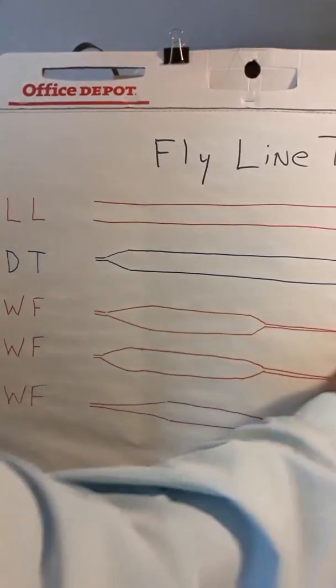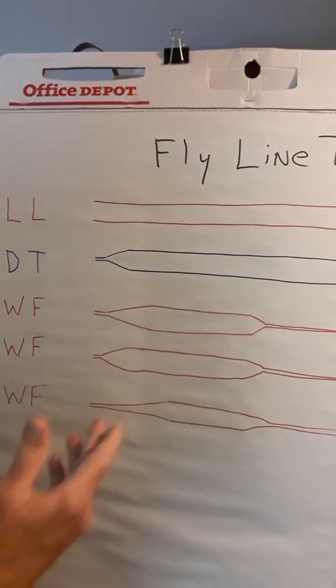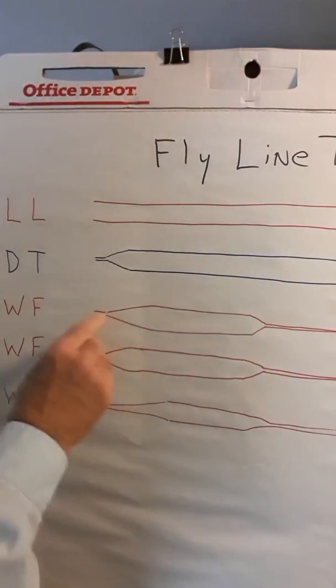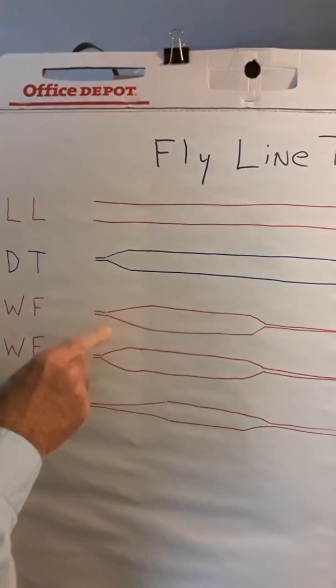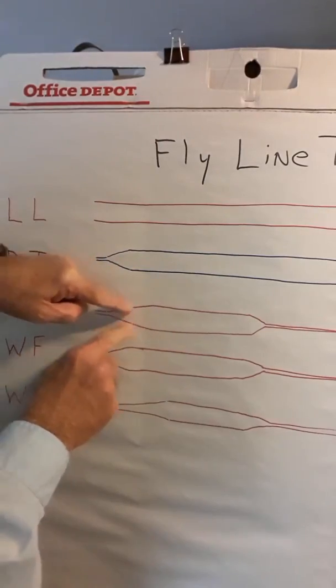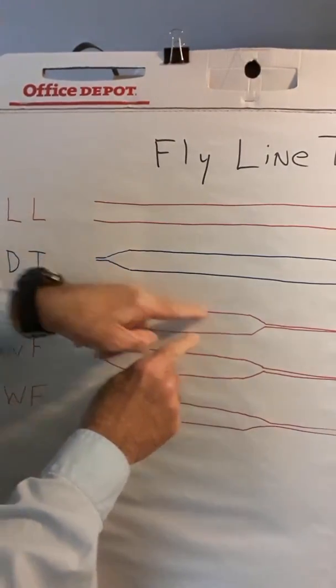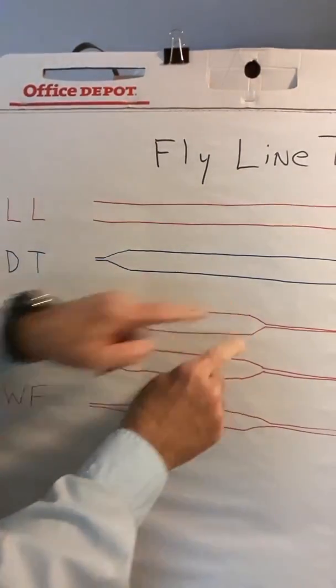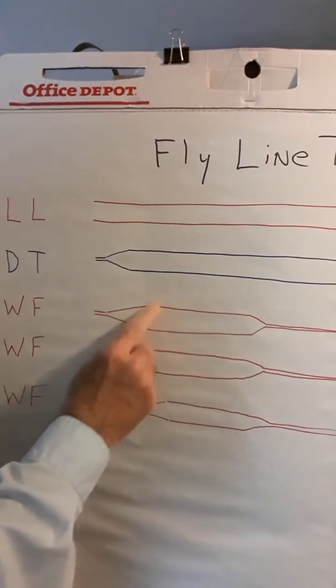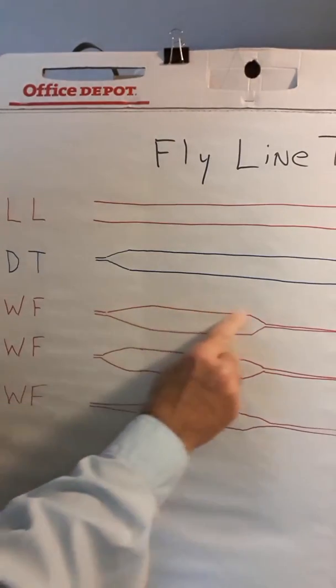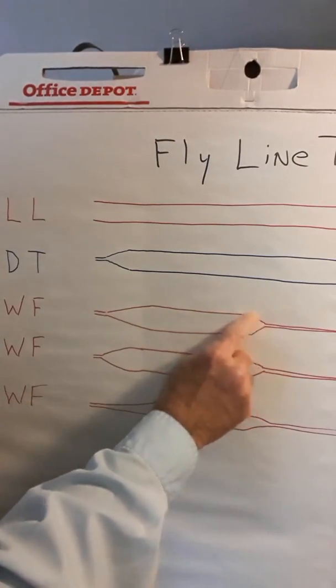But to help you understand what tapers are all about, if this is a typical fly line, say anywhere from 80 to 110 feet, you'll have that little tip section where you'll tie your leader to, and you'll notice here it's tapered. And then it's level for a ways, and then it's tapered again. So this is the front taper. This is the belly of the line. This is the rear taper.